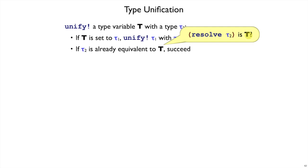Notice that we don't need to resolve T, because if T was set to some other type, we would have taken care of that in the first bullet, so it's not. So we can ask the question if resolve of tau2 is simplified to T. If it is, then you just succeed.